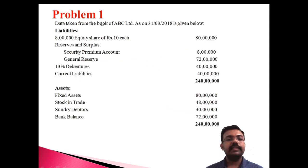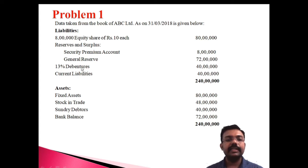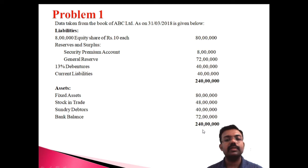Let's move to the first problem. Data taken from ABC Limited as on 31st March 2018. Liability side: equity share capital 80 lakh, security premium account 8 lakh, general reserve 72 lakh, 13% debentures 40 lakh, current liabilities 40 lakh — total 2 crores 40 lakh. Asset side: fixed assets 80 lakh, stock in trade 48 lakh, sundry debtors 40 lakh, bank balance 72 lakh — total 2 crores 40 lakh.